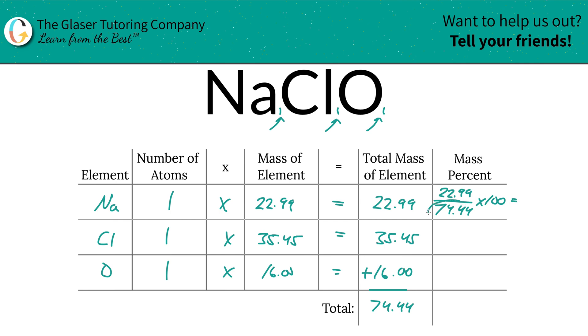This is a simple percent calculation, part over whole times 100. Fairly straightforward. And the total mass percent is going to be 30.88%. And that's the percentage for sodium.